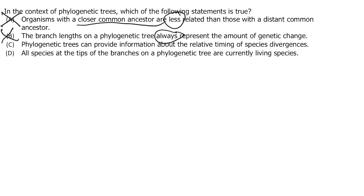C says phylogenetic trees can provide information about the relative timing of species divergences. That sounds pretty good — yes, they can tell us about the timing at which species diverged from one another. We use our different nodes and branches to show the most recent common ancestor and the species that diverged from them. D says all species at the tips of the branches on a phylogenetic tree are currently living species. Not all species at the tips are currently living — a phylogenetic tree can include living and extinct species. So that's not always true either. Our best answer is C.